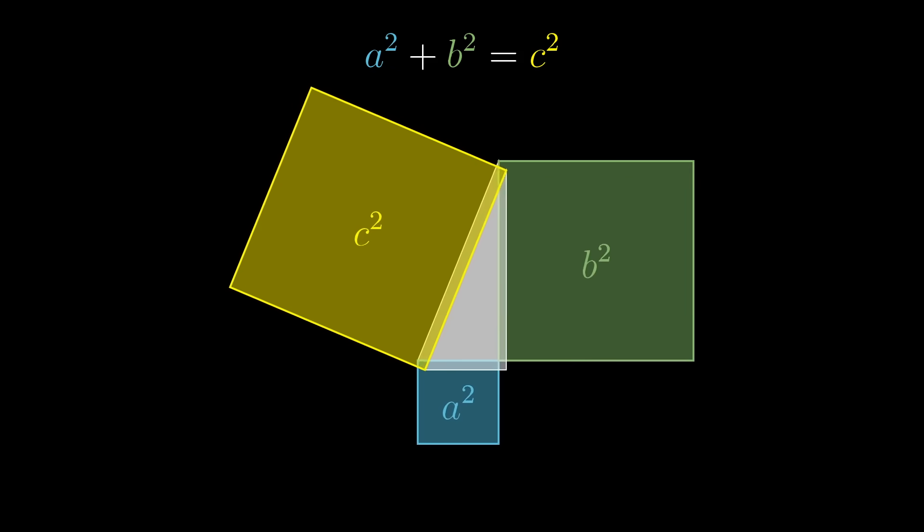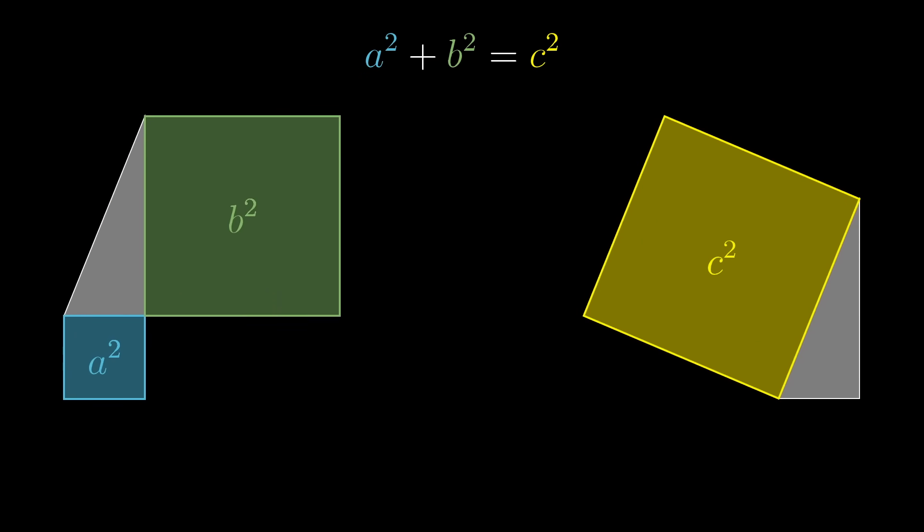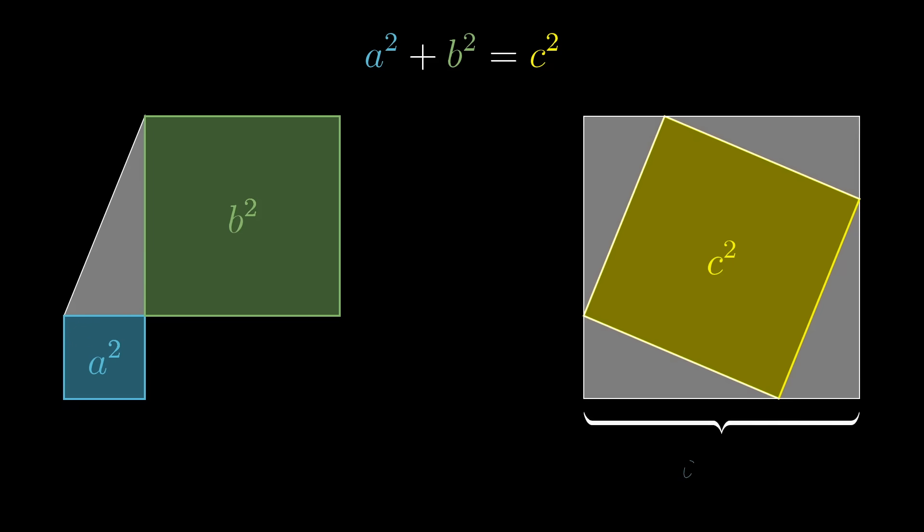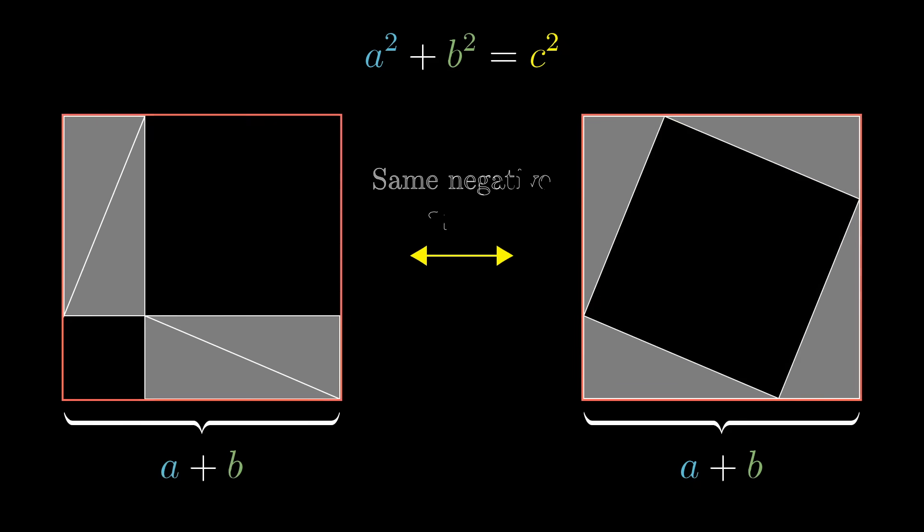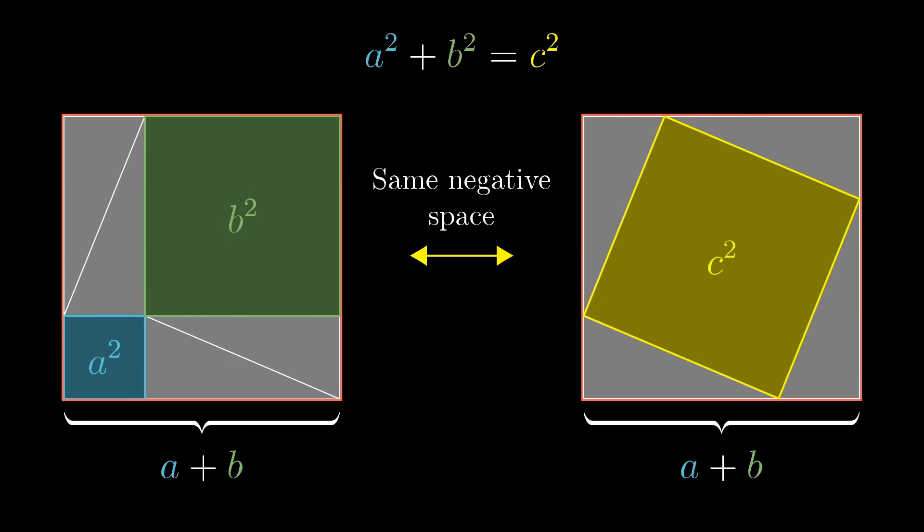And if you take that c square and add four copies of the original triangle around it, you can get a big square whose side lengths are a plus b. But you can also arrange the a square and the b square together with four copies of the original triangle to get a big square whose side lengths are a plus b. What this means is that the negative space in each of these diagrams, the area of that big square minus four times the area of the triangle, is from one perspective clearly a squared plus b squared. But from another perspective, it's c squared.